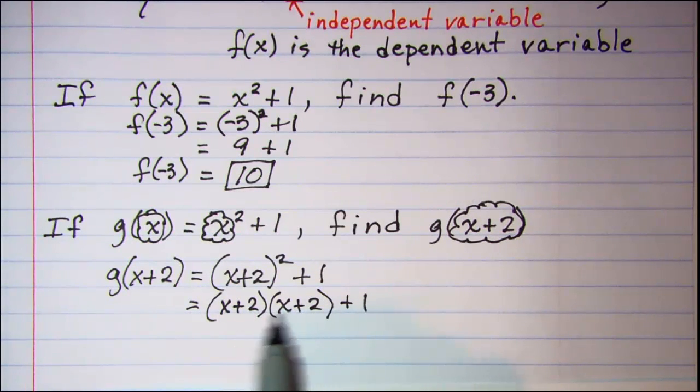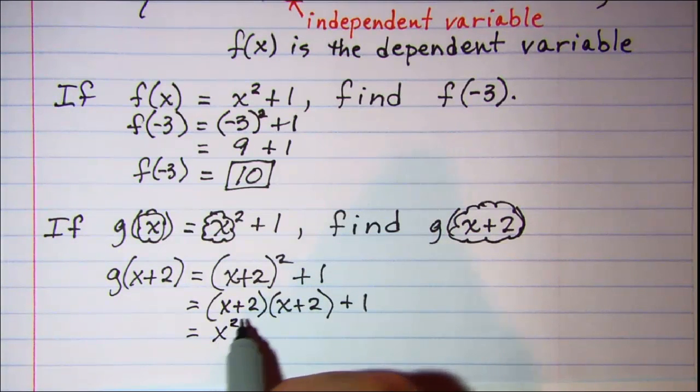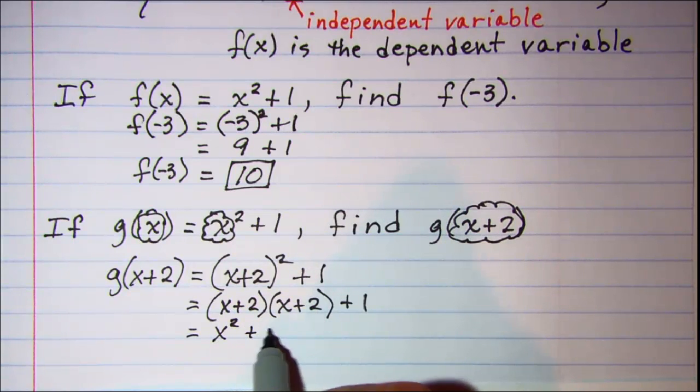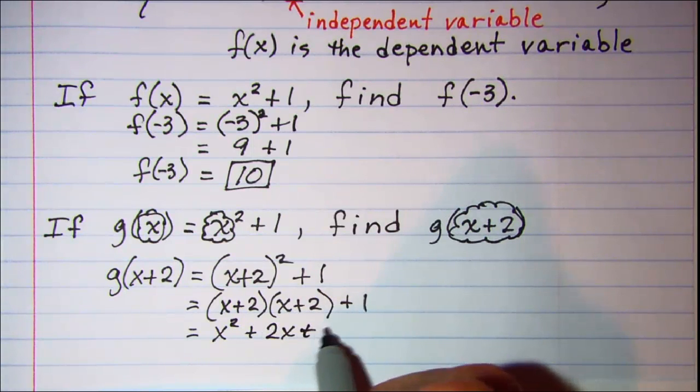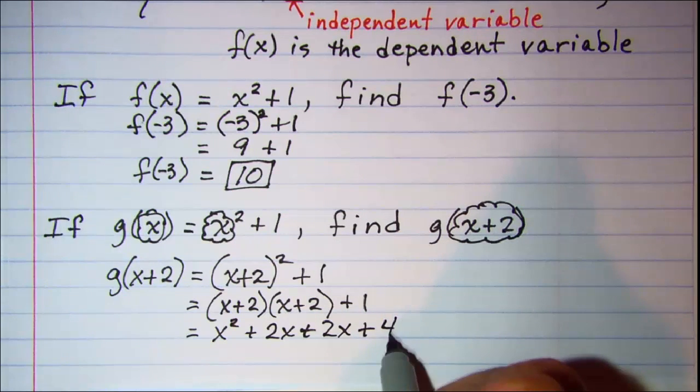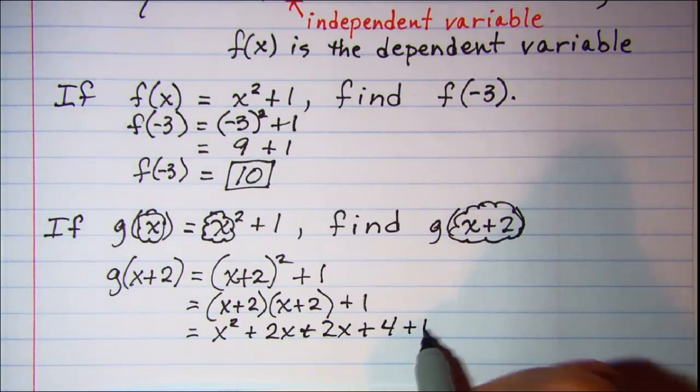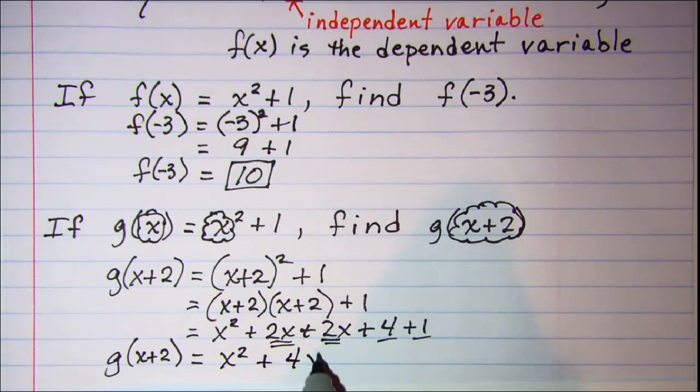Now we'll use FOIL to multiply this out. So our first terms multiplied is x squared. Our outer terms multiplied is 2x. Our inner terms multiplied is 2x. And our last terms multiplied is 4. And then plus 1 on the end there. So g(x+2) is equal to, we can combine these and these, so x squared plus 4x plus 5.